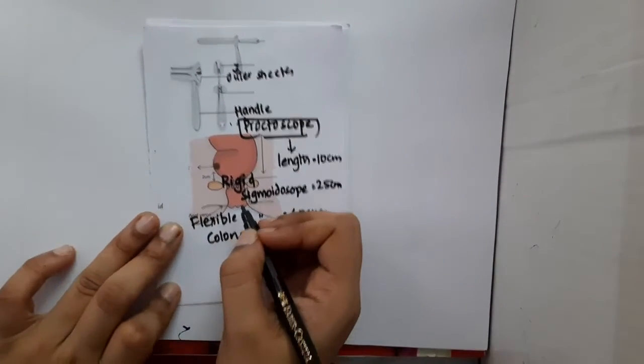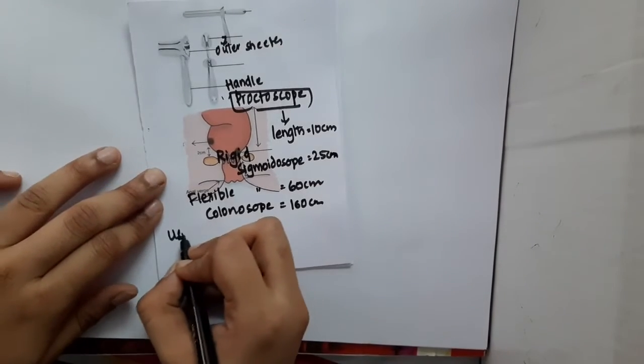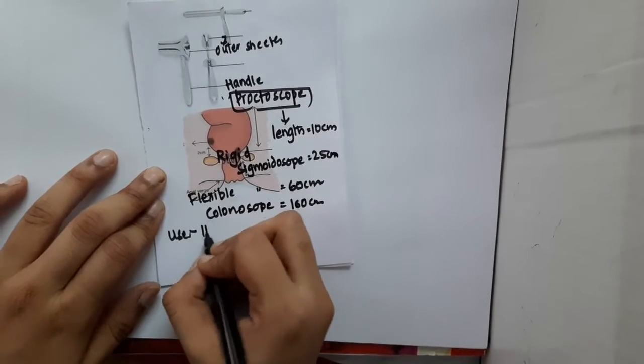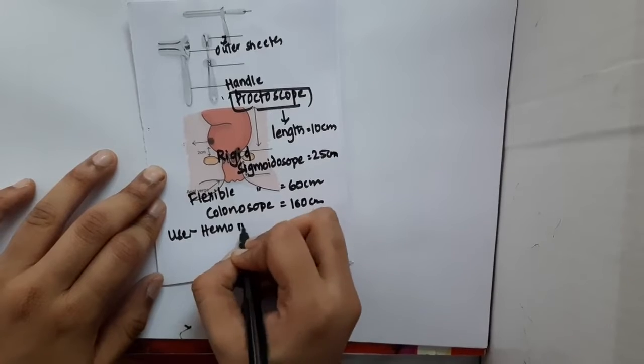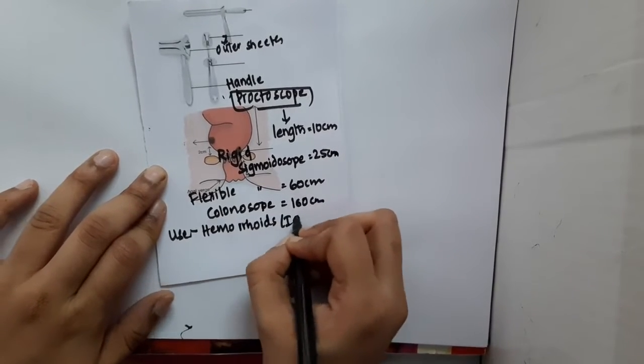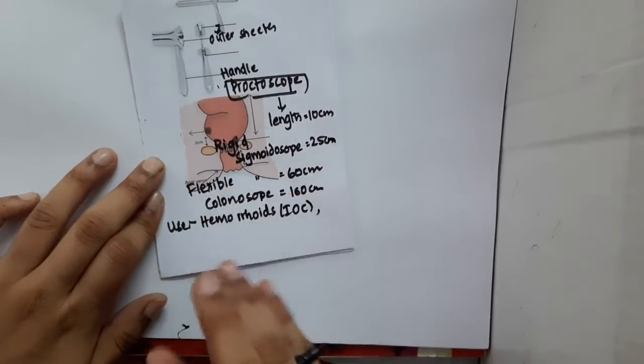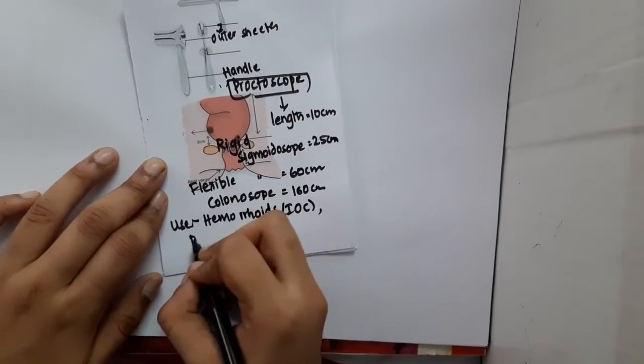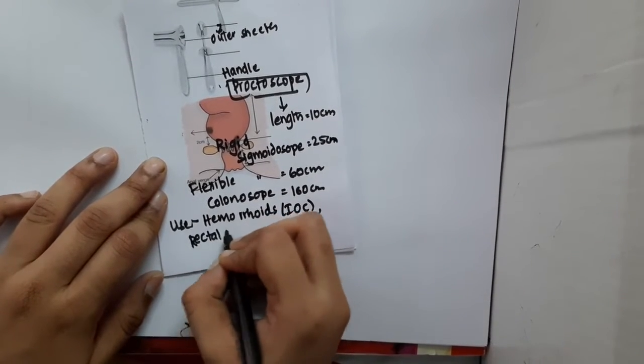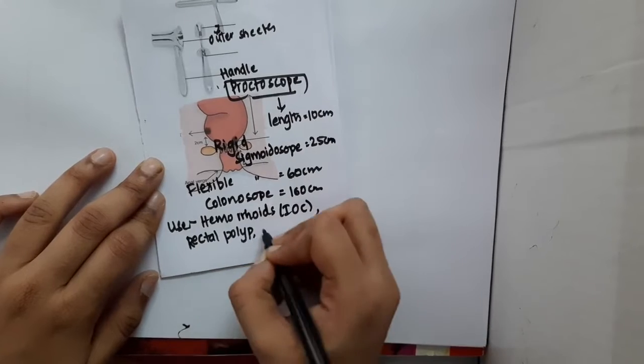Now, what are the uses of proctoscope? If you see the uses, they are used in hemorrhoids. In hemorrhoids, the investigation of choice is proctoscope. It is used for rectal polyps and rectal ulcers.